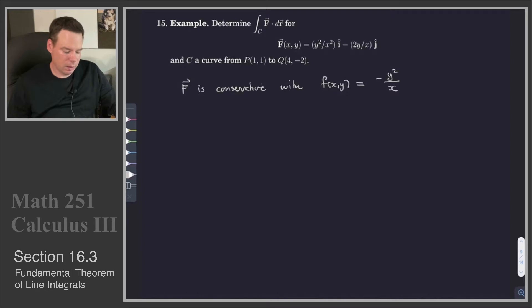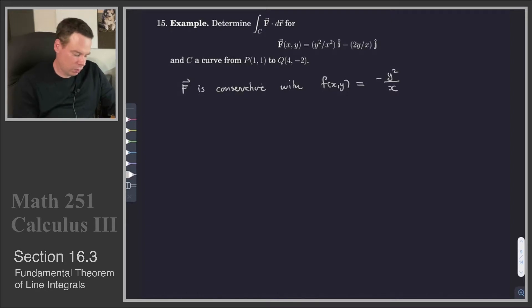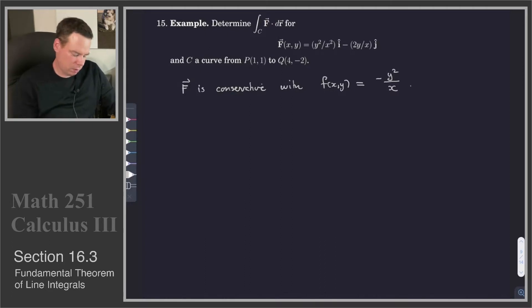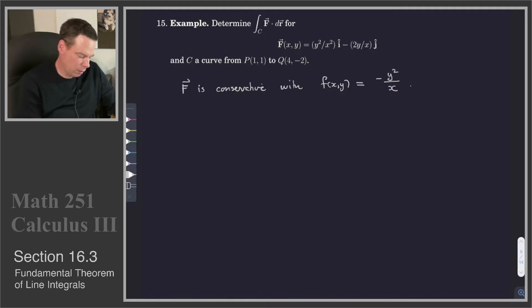So now I'll differentiate with respect to y and see what I get. I get -2y/x — and that's the second component of F. So there is our potential function, up to a constant. I could add an arbitrary constant on the end and still have a potential function. But there's our potential function.